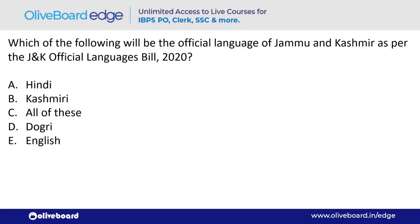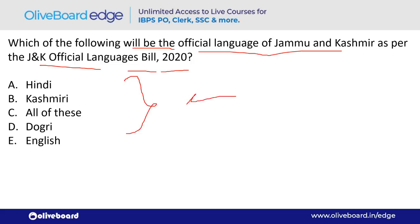What will be the official languages of Jammu & Kashmir as per the J&K Official Languages Bill 2020? The answer is all of the above — option C: Hindi, Kashmiri, Dogri, and English are the four official languages.